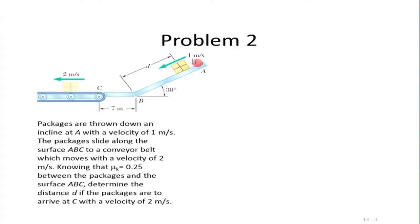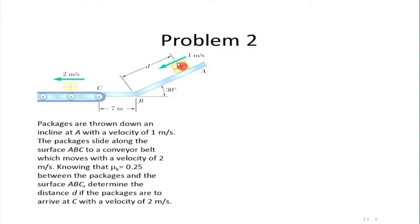The initial kinetic energy is given. The work done as the particle moves from a to b is: minus mu_k times the normal reaction times distance, plus the component of gravity — m*g*sin30 — which does positive work. The friction force does negative work and the gravity component does positive work, with the net work equal to the force times the distance. From b to c, the only work done is the dissipative friction work: 7 meters times minus mu times the normal reaction, which also changes in this section.